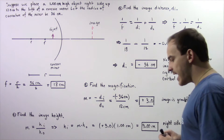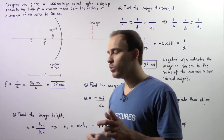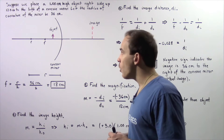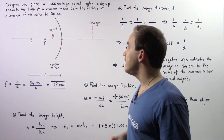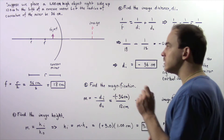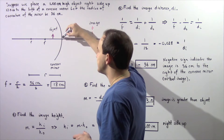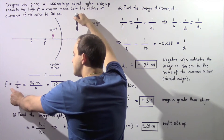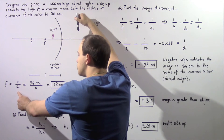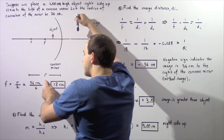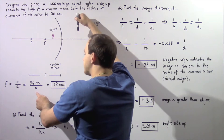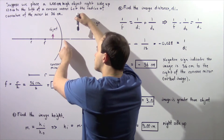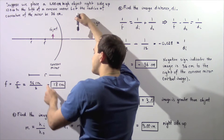Before we begin part A and before we apply the mirror equation, we have to calculate the focal length. Recalling the relationship between focal length F and radius of curvature R: the focal length F is equal to R divided by 2. Since R is 36 centimeters, 36 divided by 2 gives us 18 centimeters. So the focal length — the distance from the center of our concave mirror to point F — is 18 centimeters.